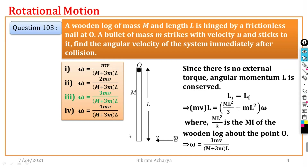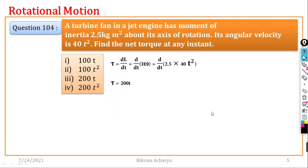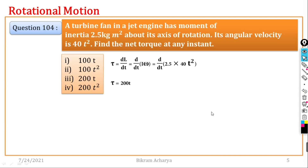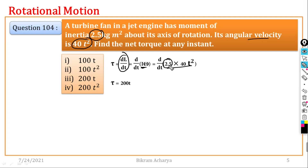Question number 104: A turbine fan in an engine has moment of inertia 2.5 kg·m². Find the net torque. Torque is the rate of change of angular momentum, so torque equals I times d(omega)/dt. With omega equal to 40t², torque equals 2.5 × d(100t²)/dt = 200t. The right option is 200t.